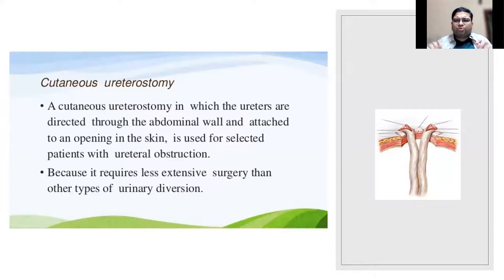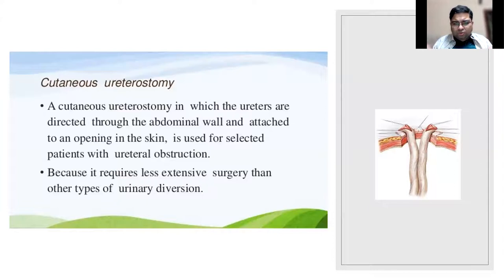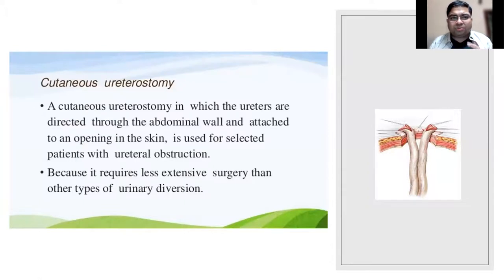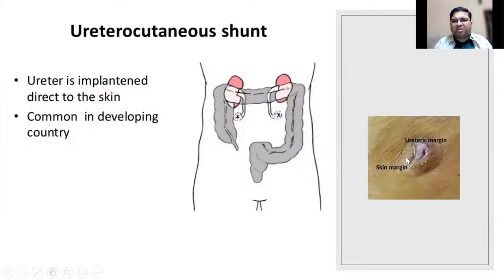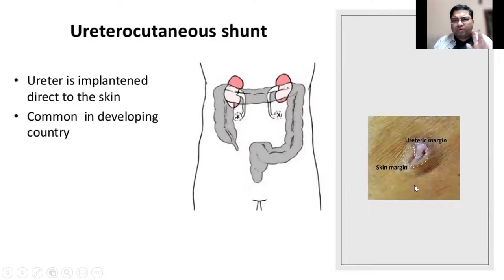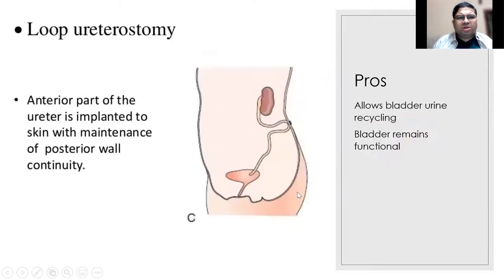With cutaneous ureterostomy, you take out the ureters and bring them to the skin. The problem is ureters are retroperitoneal and not accustomed to being pulled out - stripping them too much will compromise them. Pulled through the abdominal wall and skin, they tend to recoil back. To prevent this, you use skin-margin plastic surgical flaps - Z-flaps, Q-flaps - to prevent the stoma from slipping.